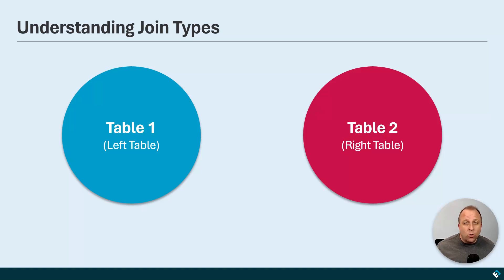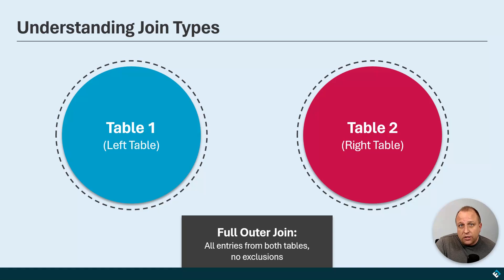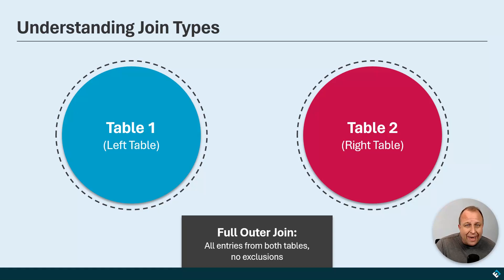The first type of join is what's known as a full outer join. A full outer join says it's great if there are matches, but ultimately I want absolutely everything that's in the first table and absolutely everything that's in the second table. This is good for some scenarios where you're just trying to mash the whole thing together, but most of the time I'm looking for something a little bit more specific.